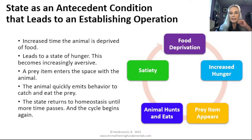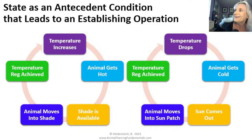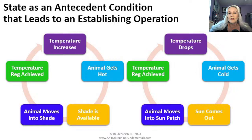We could look at another example - temperature changes. Temperature increases, animal gets hot, maybe shade is available, so the animal moves into the shade and temperature regulation is achieved. Maybe temperature drops, animal gets cold, sun comes out, and the animal moves into a sun patch and temperature regulation is achieved.